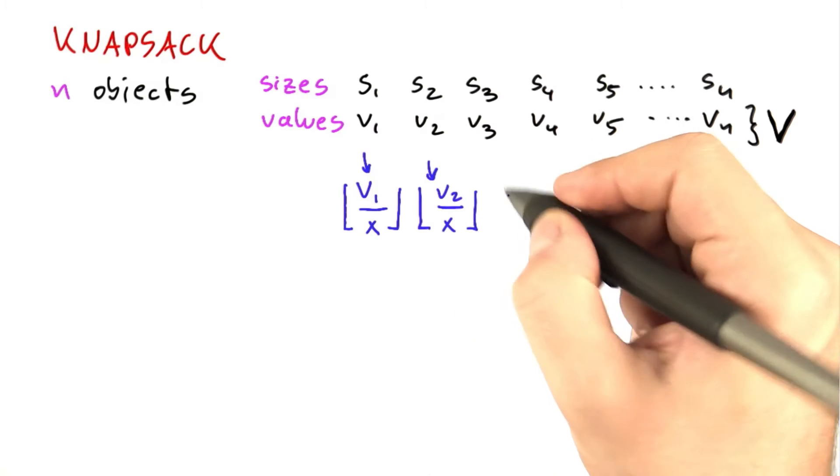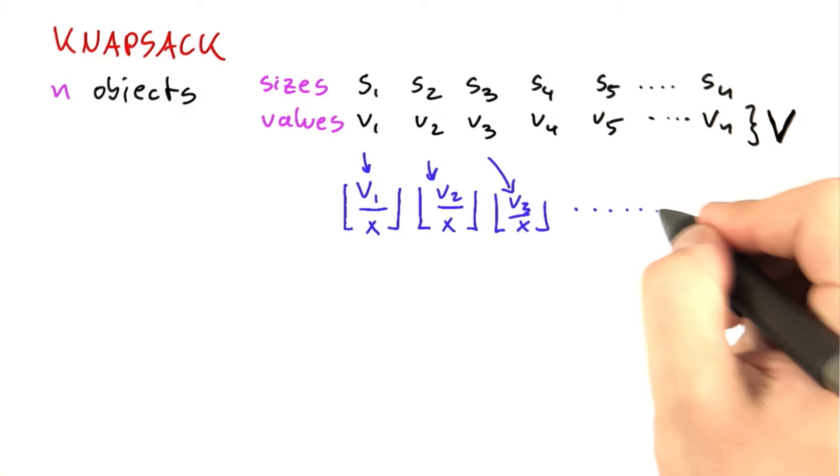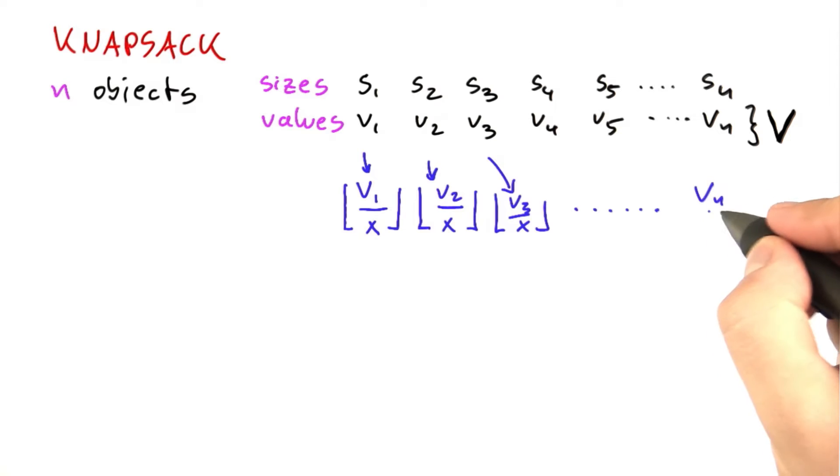So this is going to become v2 over x, this here is going to become v3 over x, and so on. And we're going to have vn over x.